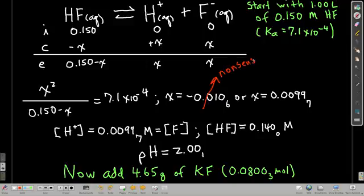And the other one is good. So we know x, about 0.01, 0.00997. So we know the concentration of hydrogen ion, which is equal to the concentration of fluoride, and the concentration of hydrofluoric acid is 0.150 minus that, 0.140 or so. And the pH is 2.00.